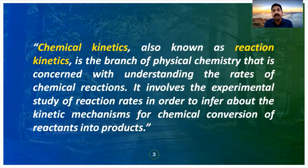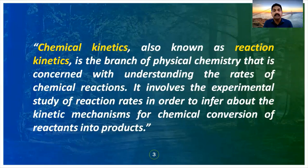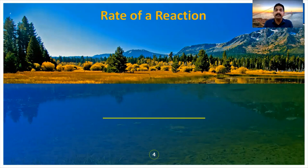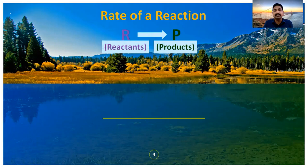First of all, I would like to remind the terms we use in chemical kinetics. We will see what is the rate of reaction. I will explain with an illustration. Here we are taking a reaction in which reactants are being converted into products. The reactants' color is purple and the products' color is green.